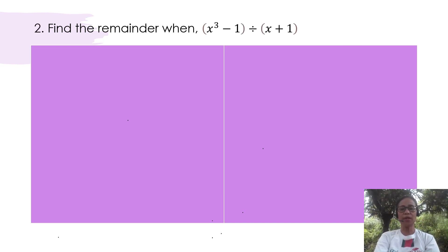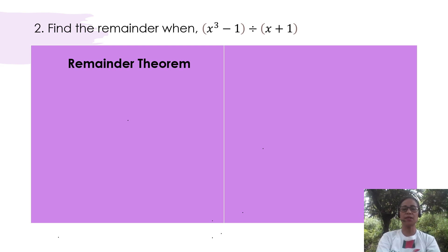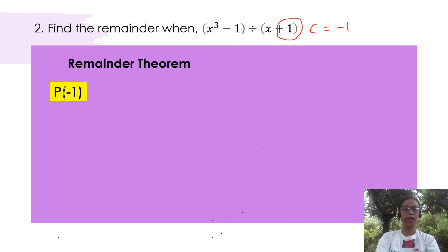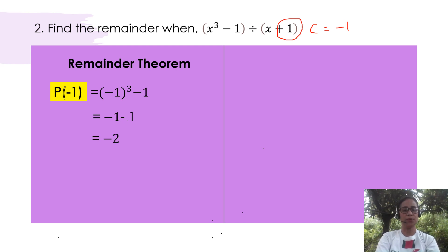Find the remainder when x cubed minus 1 is divided by x plus 1. In this example, we are going to apply the remainder theorem first. Let us first determine the value of c. Since the divisor is x plus 1, therefore our c will be equal to negative 1. So we are now going to solve for P of negative 1. This only means that negative 1 will be substituted into x cubed minus 1. With that, it will become negative 1 raised to the third power minus 1, which gives negative 1 minus 1, equal to negative 2. So our remainder is negative 2.